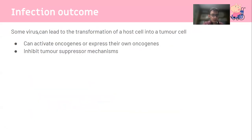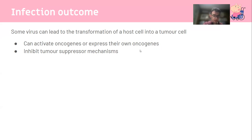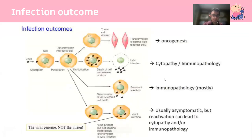Some viruses can lead to the transformation of a host cell into a tumor cell. Transformation is the conversion of a normal cell into a tumor cell, and it can occur by activating oncogenes within the host cell, by the virus carrying its own oncogenes that get incorporated into the cell, or by inhibiting tumor suppressor mechanisms or tumor suppressor genes.